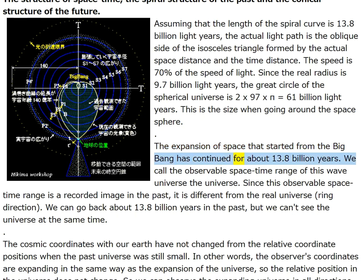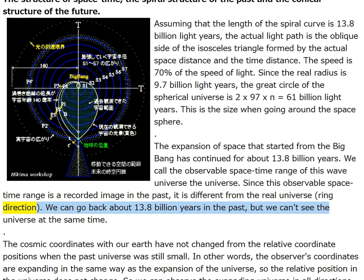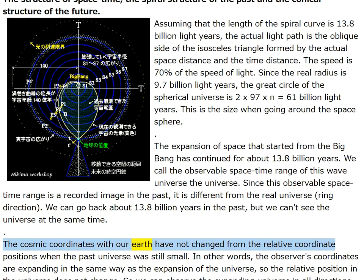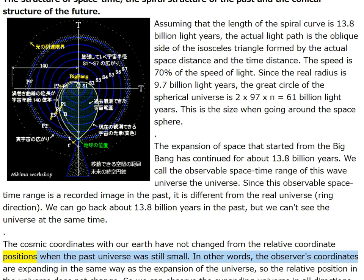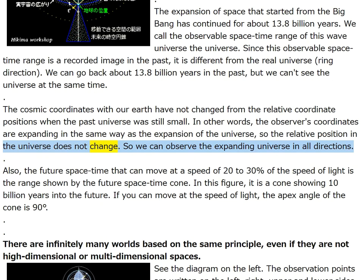The expansion of space that started from the big bang has continued for about 13.8 billion years. This observable space-time range is a recorded image of the past, different from the real universe. The cosmic coordinates with our earth have not changed from the relative coordinate positions when the past universe was still small — the observer's coordinates are expanding in the same way as the expansion of the universe, so the relative position does not change and we can observe the expanding universe in all directions.